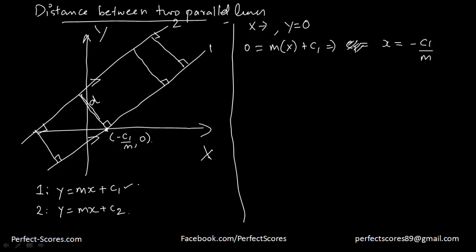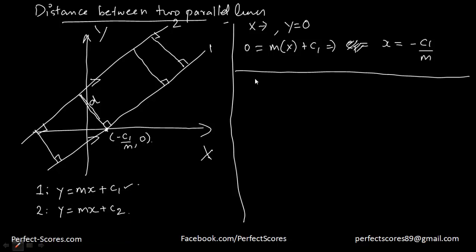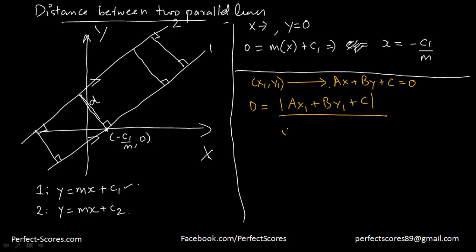If you've seen the previous video, we talked about the distance from a point to a line. The expression is: given a point (x1, y1) and a line ax + by + c = 0, the distance from the point to the line is the modulus of (ax1 + by1 + c) divided by the square root of (a² + b²).